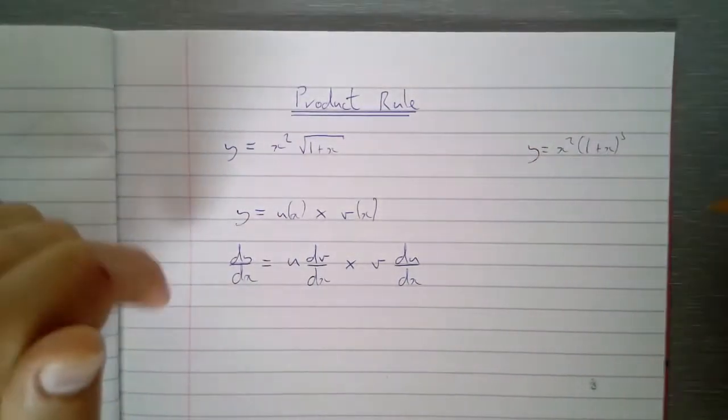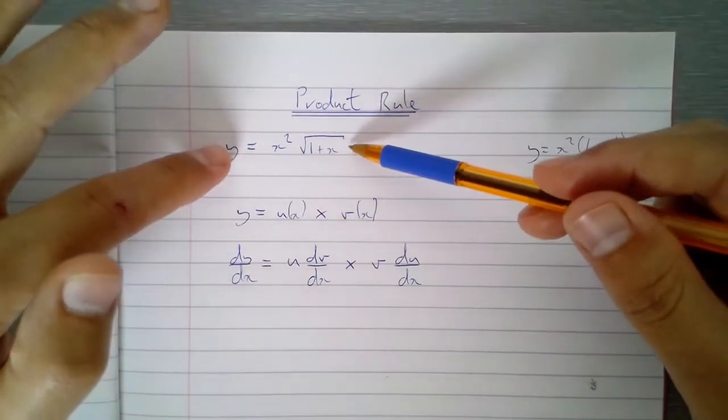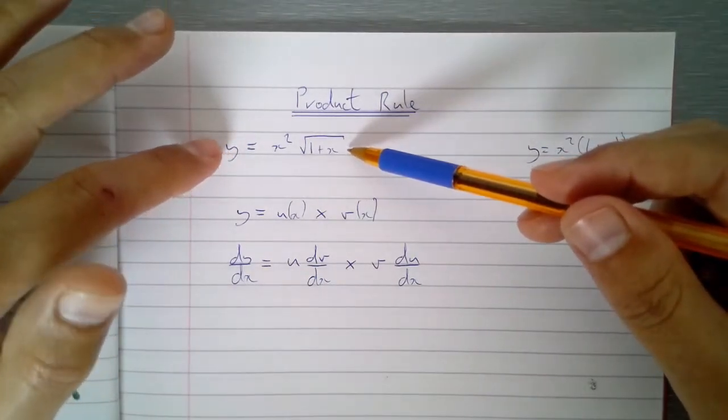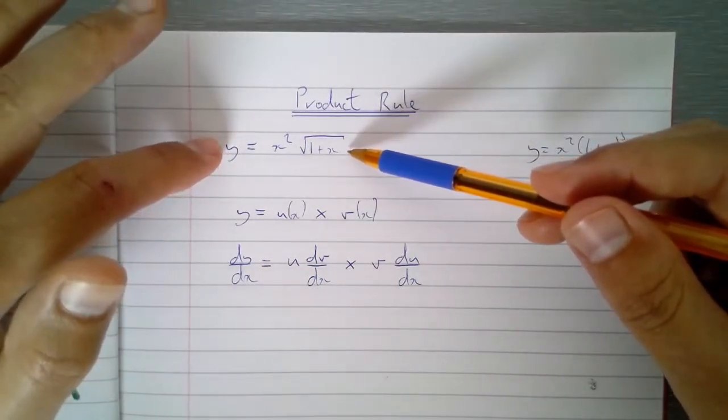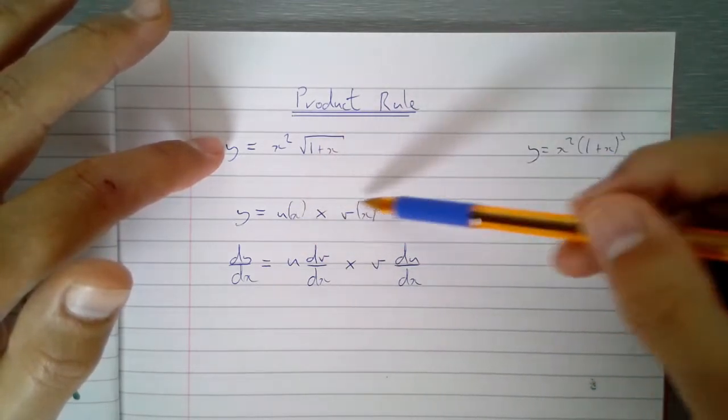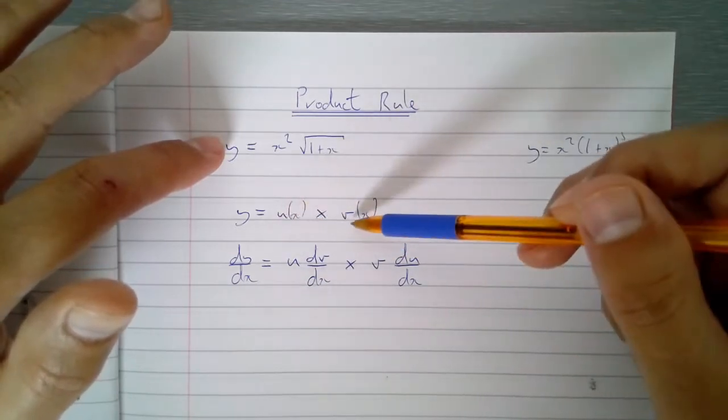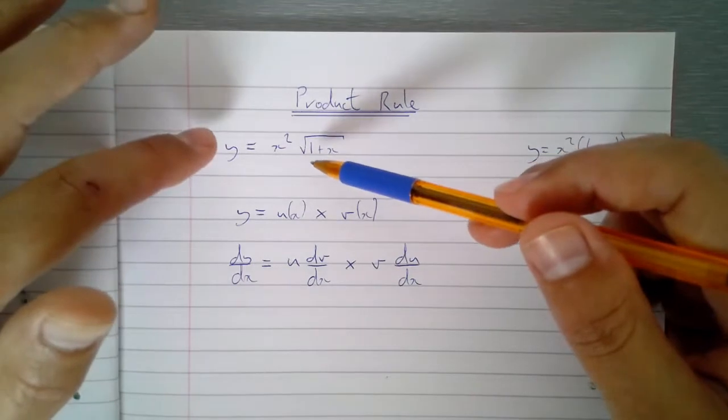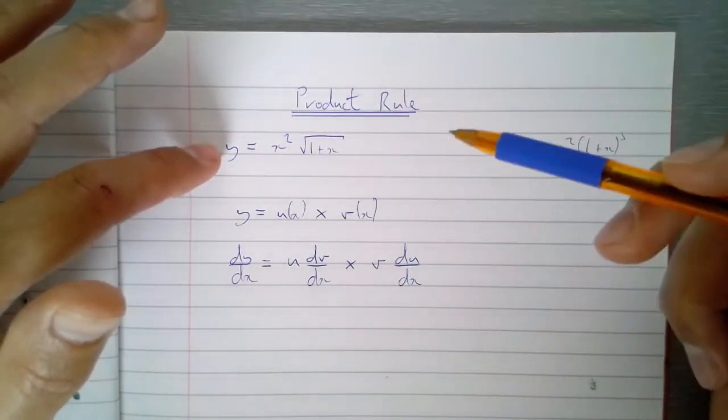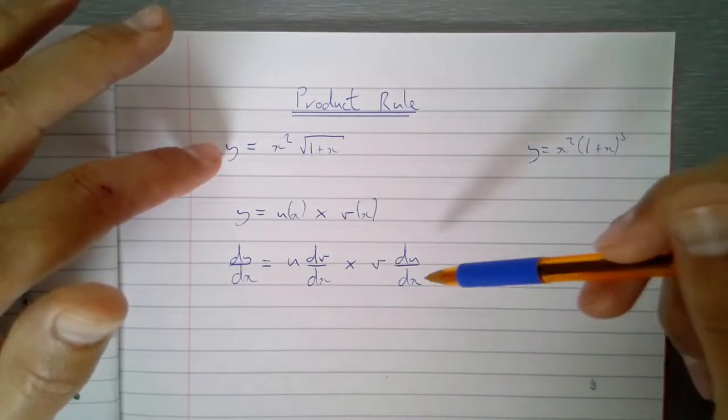So basically what we need to do is if we're given a function like this, we need to identify which bit is going to be u, which bit's going to be v. It's quite normal not to write these bits of x here. I'm just written it here just to really say to you this isn't some variable or something, these are functions. And then once you've identified which bit you want to be u, which bit you want to be v, differentiate them and then plug them into this formula.